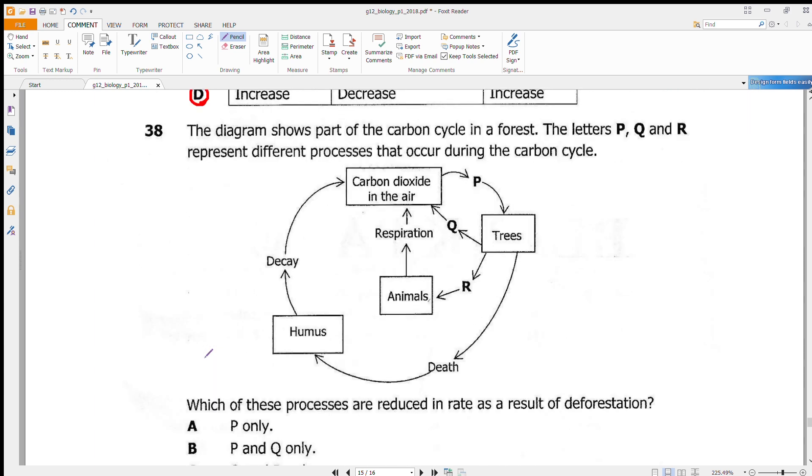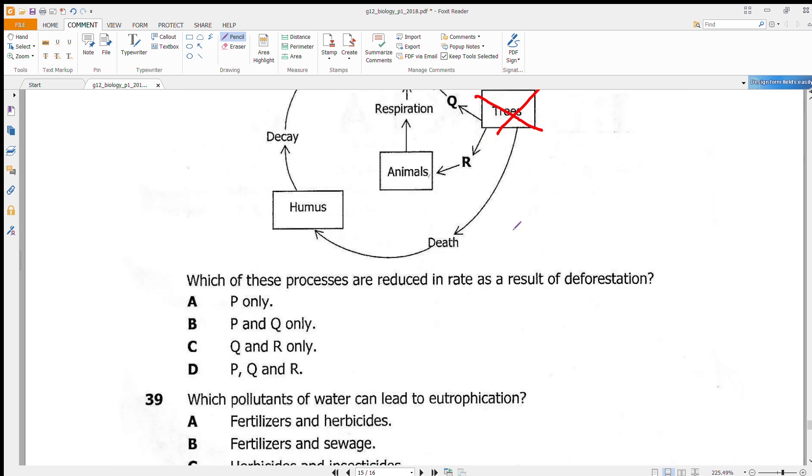Question 38: The diagram shows part of the carbon cycle in a forest. The letters P, Q, and R represent different processes that occur during the carbon cycle. Which of the processes are reduced in rate as a result of deforestation? In other words, which processes depend on a tree? If you remove the tree, process Q will not occur because it's depending on the tree, and P also will not occur. All these processes will be affected, so our answer here would be D.